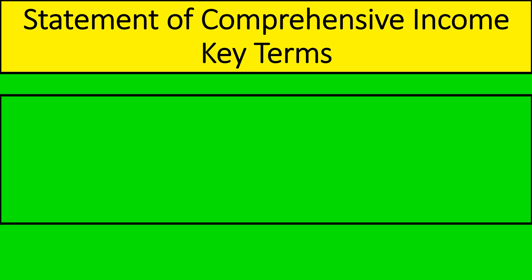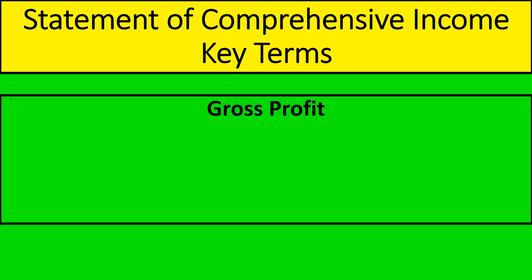We're then going to use these two terms to make a new one called gross profit. Gross profit is the money you have left over after you've paid for making your item. We calculate it by taking the sales revenue from selling our pizzas and taking off the cost of sales — the cost of making our pizzas. This money will go towards paying off the other expenses of the business and then hopefully some of it kept as profit.